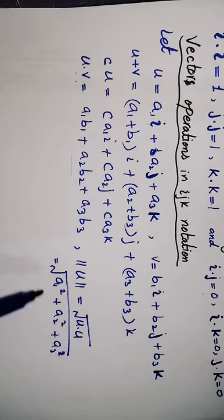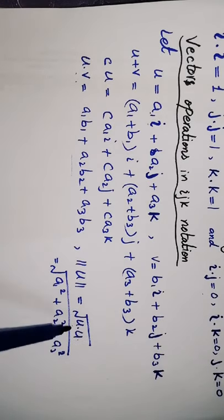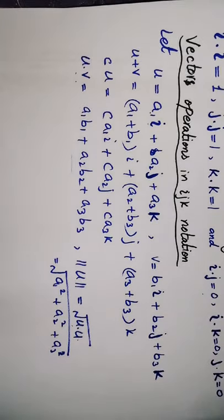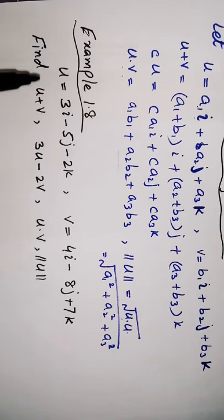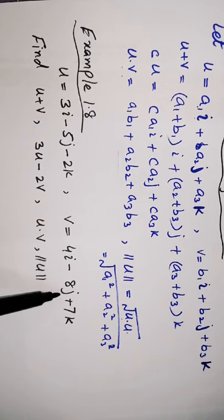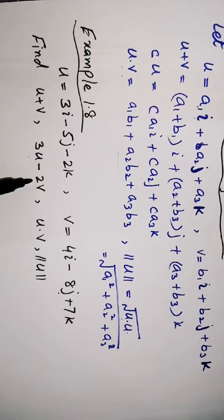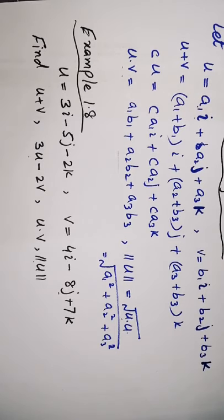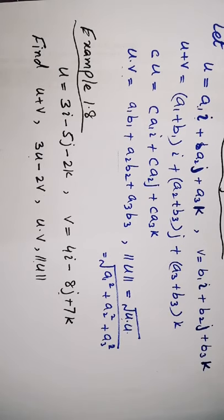So we can show the dot product: for example, u equals 5i minus 2k and v equals 4i minus 8j plus 7k. You have to find u plus v, 3u minus 2v, u dot v, and the norm of u. Let's pause the video and find out. Here I have defined addition, scalar multiplication, and other terms. Let's calculate and solve it.